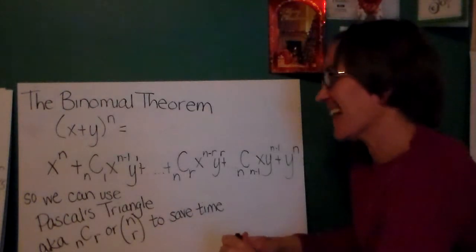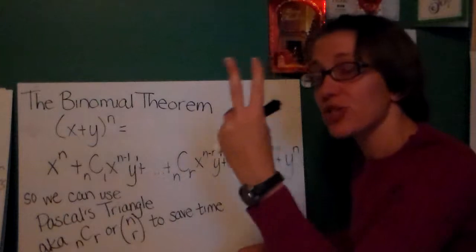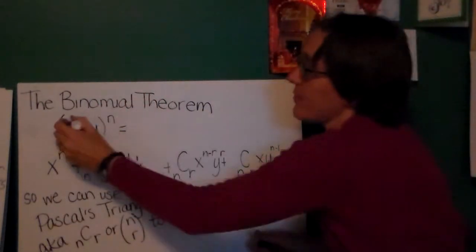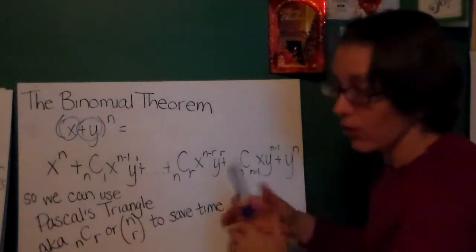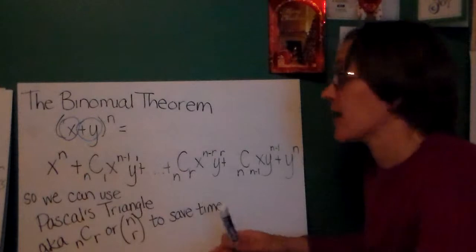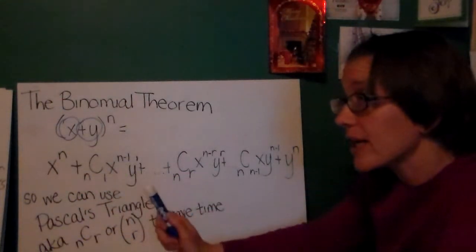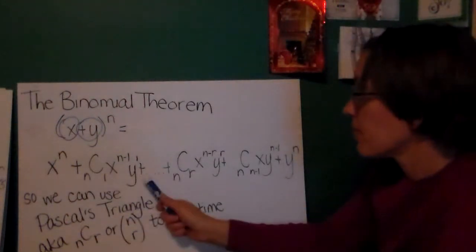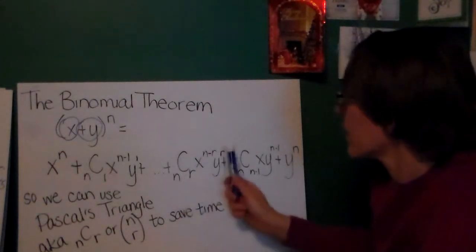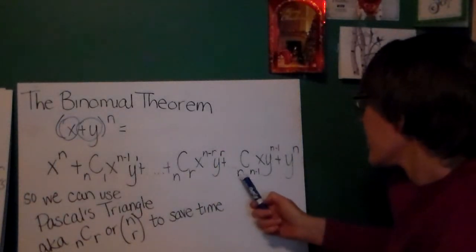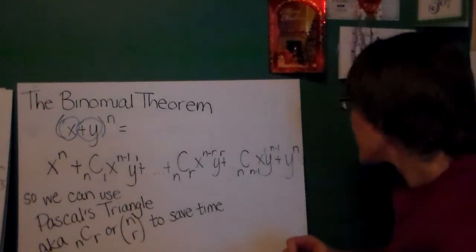So it turns out that if you have to raise a binomial expression, remember that's two terms that are being added or subtracted. We can add x plus y to the nth power. Well, you don't need to multiply all of those together over and over and over again. I know you may love multiplying binomials, but I don't. So, notice I have x to the nth power, then nC1 times x to the n minus 1 times y to the 1st, plus more stuff in the middle, nCr times x to the n minus r times y to the r, plus nC n minus 1, x to the 1st power, y to the n minus 1, plus y to the n.